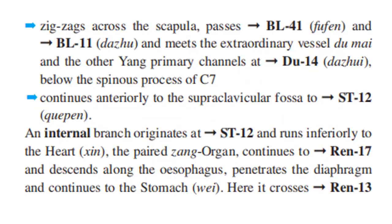The channel zigzags across the scapula, passes Bladder 41 and Bladder 11, and meets the extraordinary vessel Dumai and other yang primary channels at DU14, below the spinous process of C7. It then continues anteriorly to the supraclavicular fossa at Stomach 12.